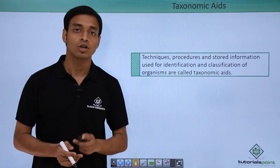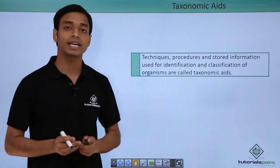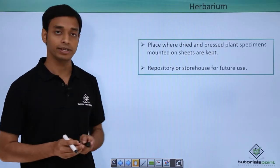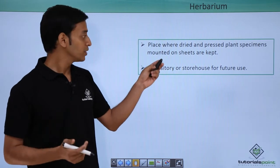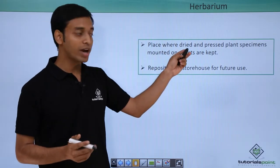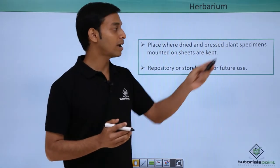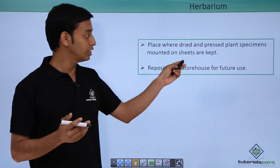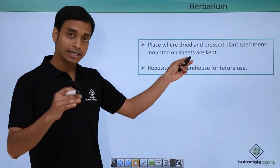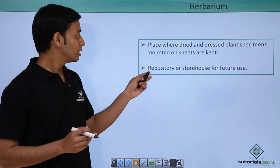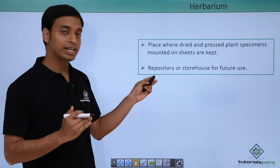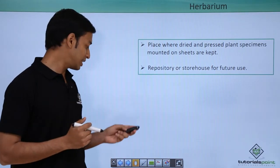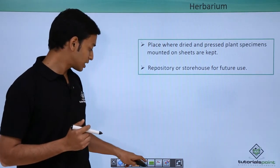The first taxonomic aid we are going to talk about is the herbarium. A herbarium is a place where dried and pressed plant specimens are kept, mounted on sheets, and stored. These actually act as a repository or storehouse for future use.